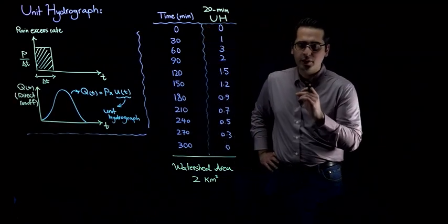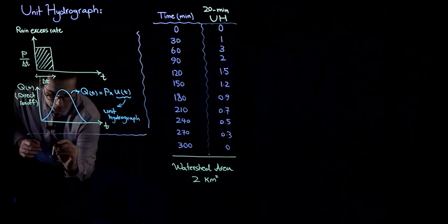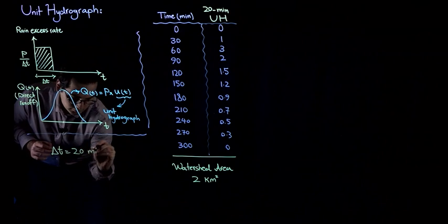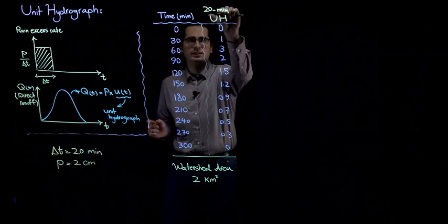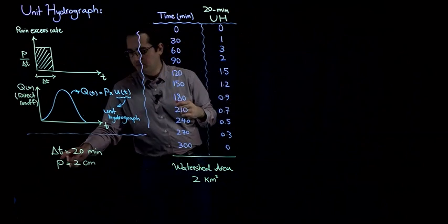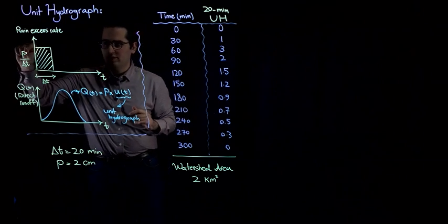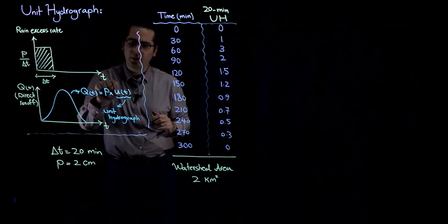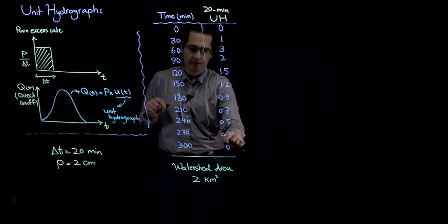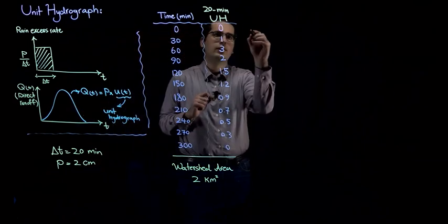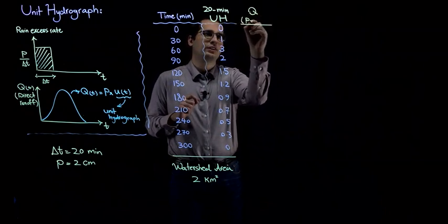In the second part of this problem, we are going to estimate the direct runoff hydrograph for a rainfall with a delta T of 20 minutes and a depth of 2 centimeters. This delta T matches the delta T for our unit hydrograph, which is good. P equals 2 centimeters. Whenever we have a rainfall with depth P, the only thing we need to do is multiply P by the ordinates of the unit hydrograph. We have ordinates from time 0 to 300 minutes, so we simply multiply them all by 2.